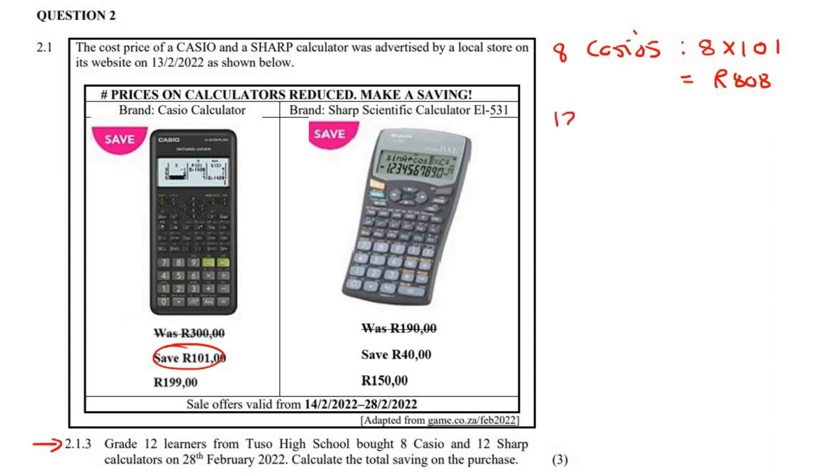Then on the 12 Sharp calculators, for each Sharp calculator they saved 40 rand. So you could say 40 multiplied by 12, and that would be 480 rand. So the total savings would be 808 rand plus 480 rand, and that would be 1,288 rand.